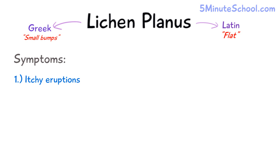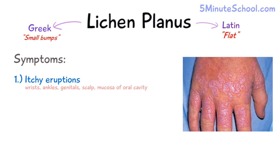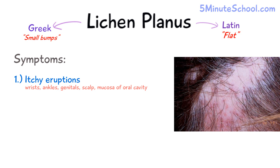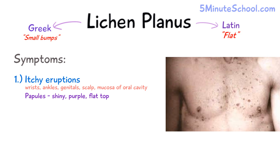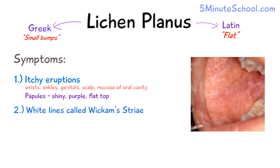The symptoms of lichen planus involve numerous itchy eruptions on the skin, particularly on the wrists and ankles. They can also affect the mucosa of the mouth, the genitals, and the scalp. These itchy eruptions are usually shiny, purple, and have a flat top — they are known as papules. There may also be the presence of white lines on the surface of these papules, called Wickham striae.